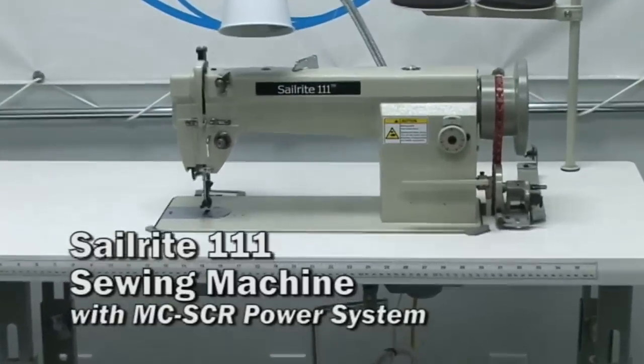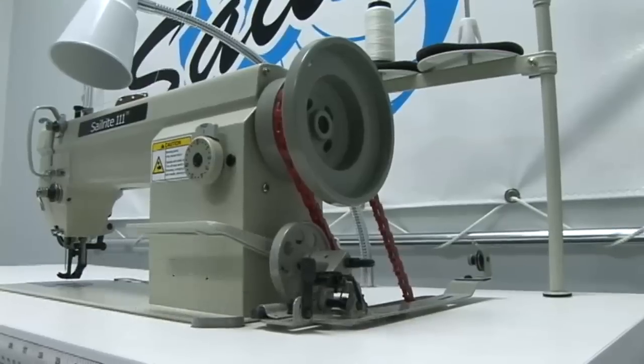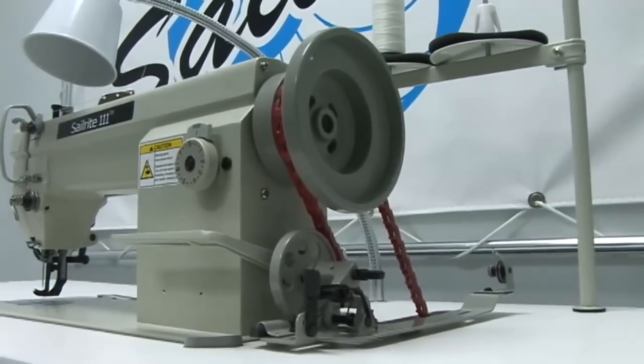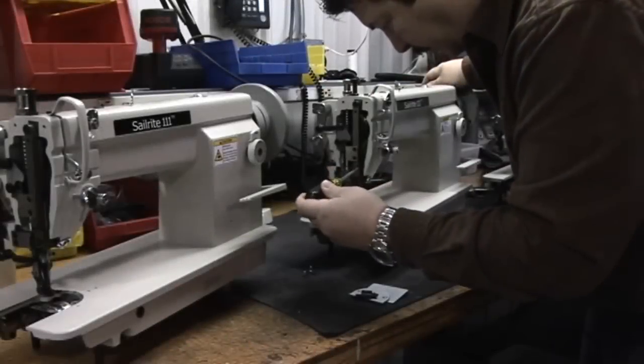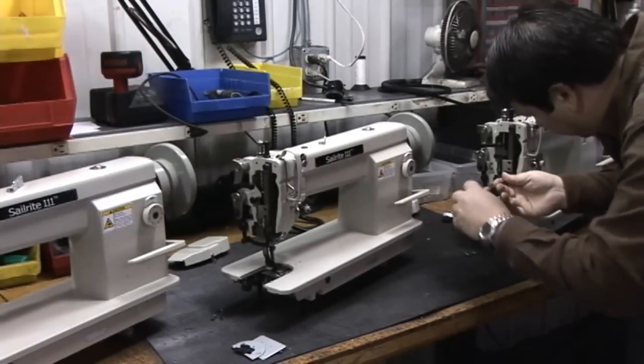Introducing the Sailrite 111 Sewing Machine, it's a full size straight stitch commercial sewing machine that features a compound walking foot. Sailrite 111 sewing machines are fully tuned and adjusted by qualified Sailrite technicians.